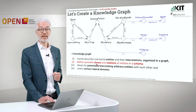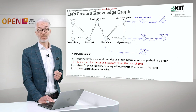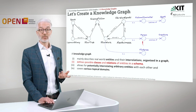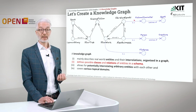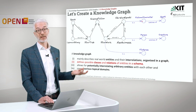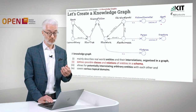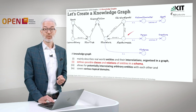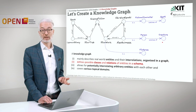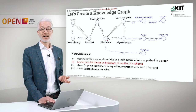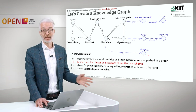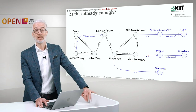The third point — it defines possible classes and relations of entities in a schema. For that, we would have to extend the graph to make clear what Obi-Wan Kenobi is: it's a fictional character, and a fictional character is a subclass of something we might refer to as an agent. Alec Guinness is a person, which is a subclass of something we might refer to as a creature. And Star Wars, for example, is a film series. These are classes — shown here in blue — that we have introduced.